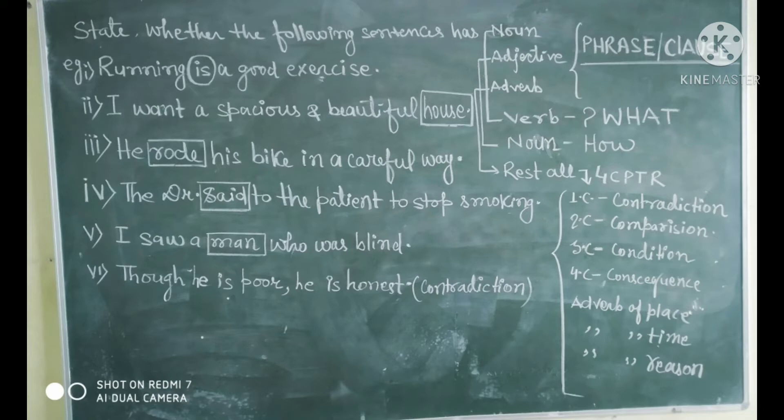In the first sentence you are watching, running is a good exercise. We are finding that after running we have the verb 'is' which has been circled in the first sentence. So running is your noun phrase. Another way to identify a noun phrase is to ask a question from the verb. First sentence hai, running is a good exercise. Isme is aapka verb hai. Verb se sawal puchho what. What is a good exercise? The answer is running. So running is your noun phrase.